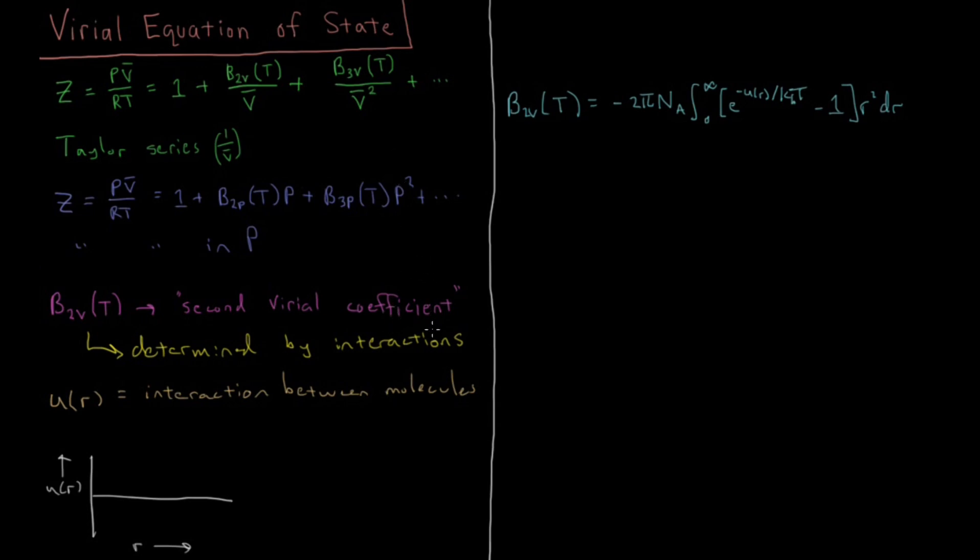So if we were to plot this versus temperature, there might be some temperature where we find that this second virial coefficient is equal to zero. And if it's equal to zero, then that gas is going to behave ideally at low temperatures.